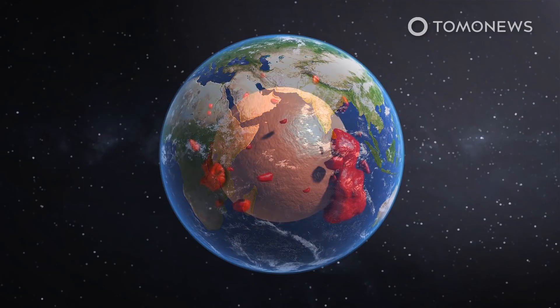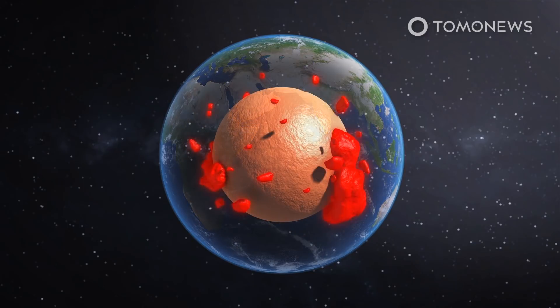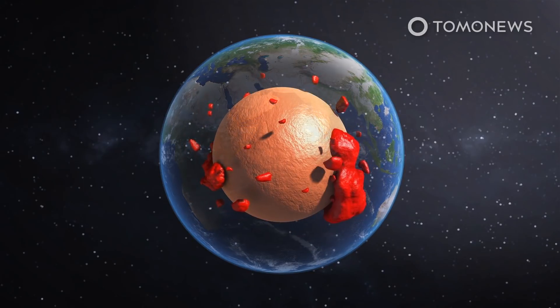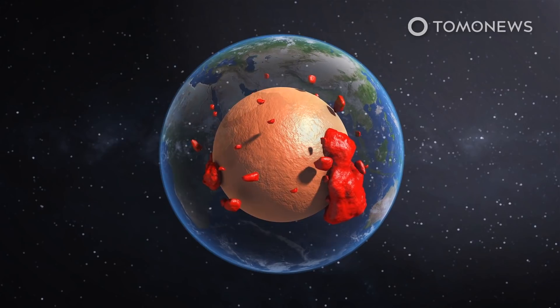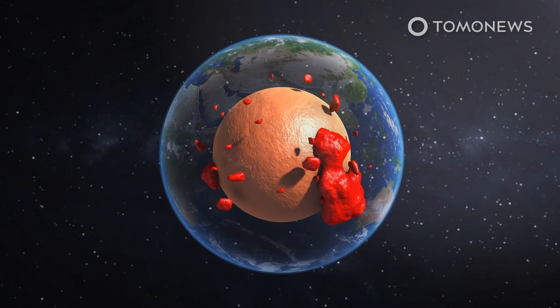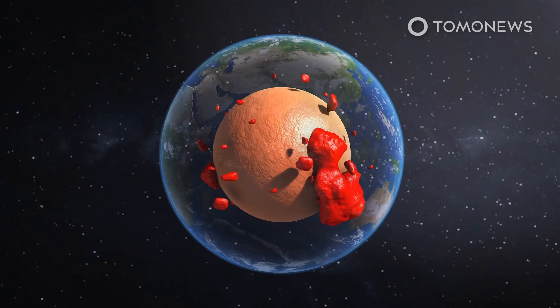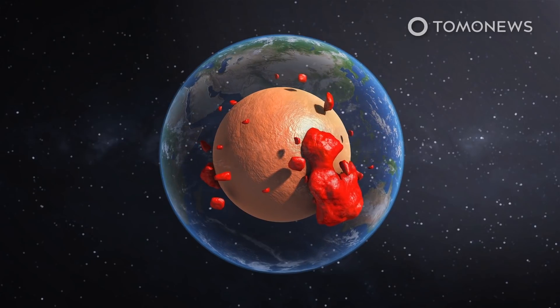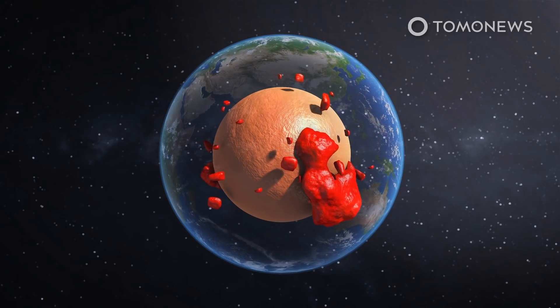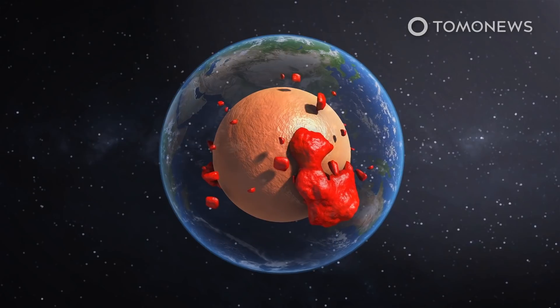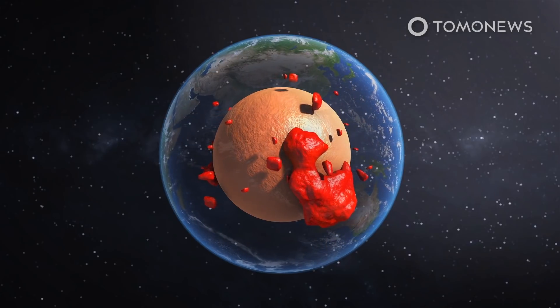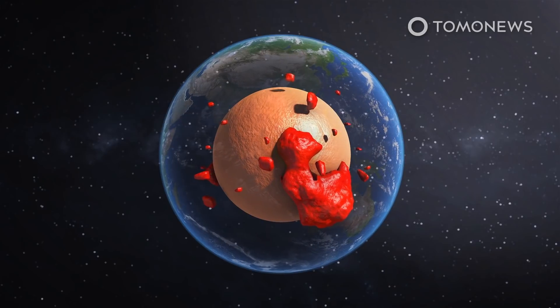For decades, seismologists have puzzled over these two blobs, which sit below West Africa and the Pacific Ocean, and straddle Earth's core like a pair of headphones. Up to 1,000 kilometers tall and several times that wide, they are the largest thing in Earth's mantle, says Qian Yuan, a PhD student in geodynamics at Arizona State University, who presented the hypothesis at the Lunar and Planetary Science Conference in March.